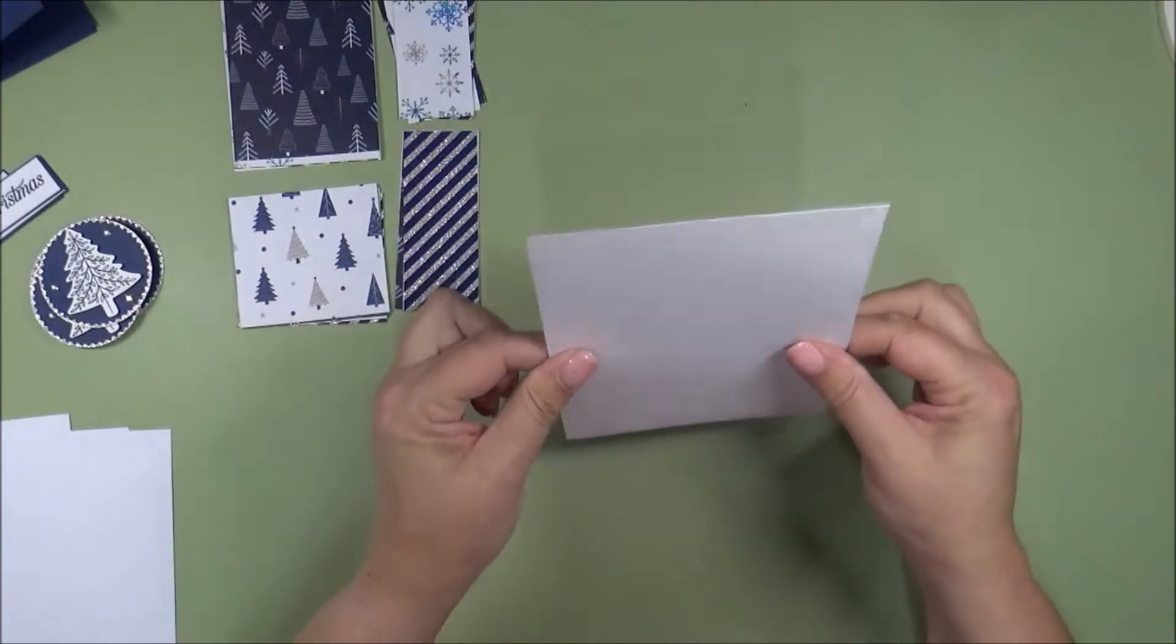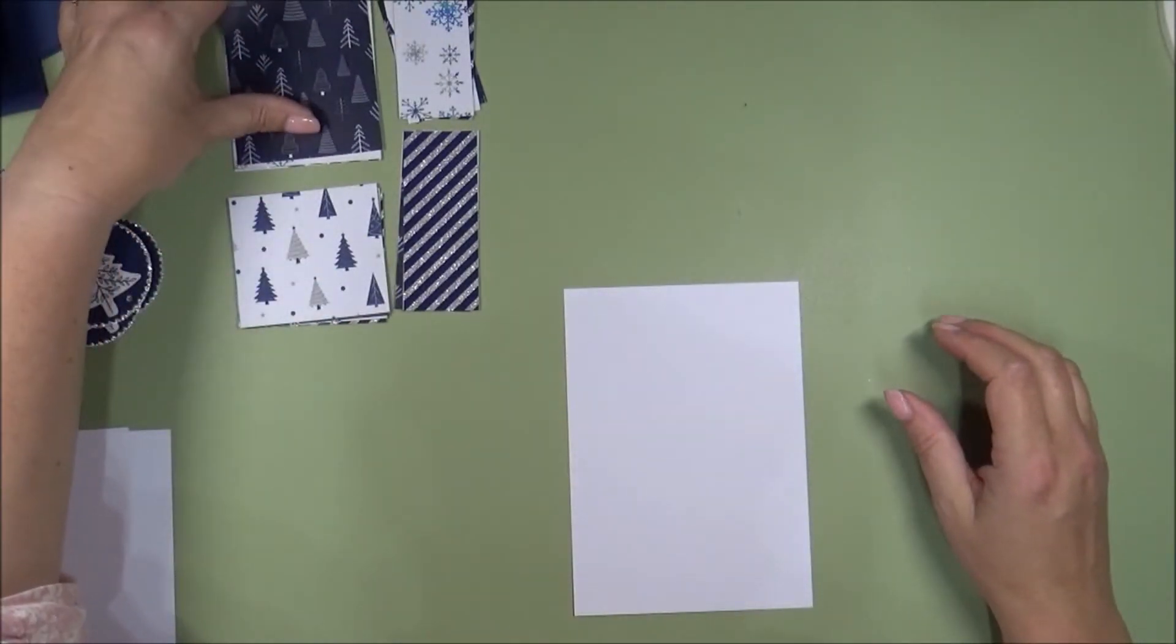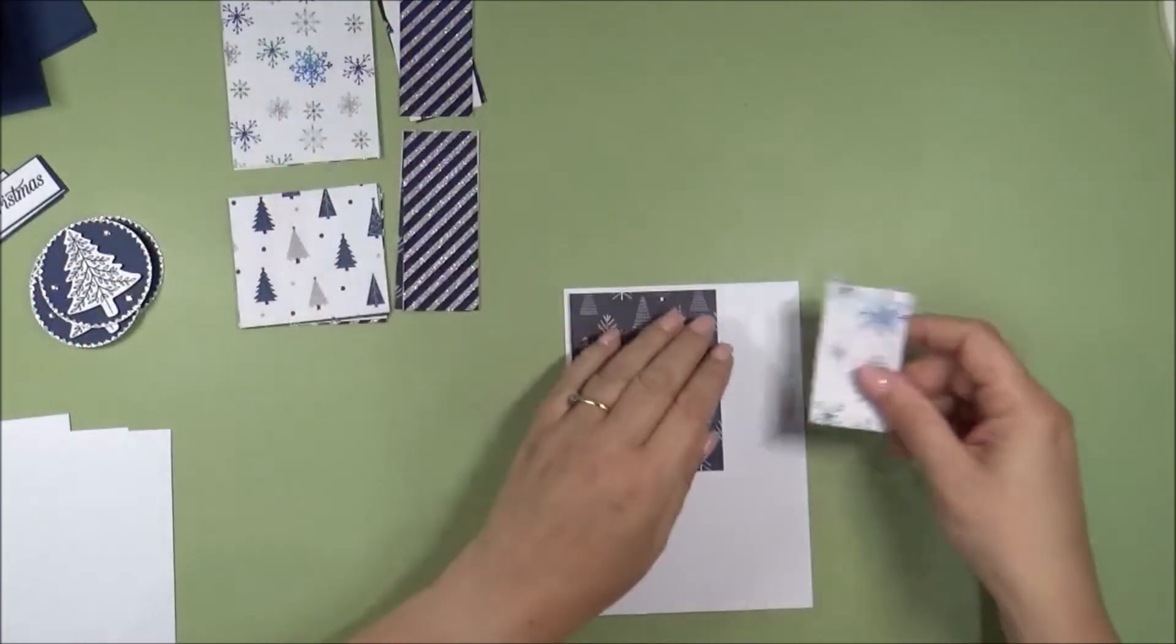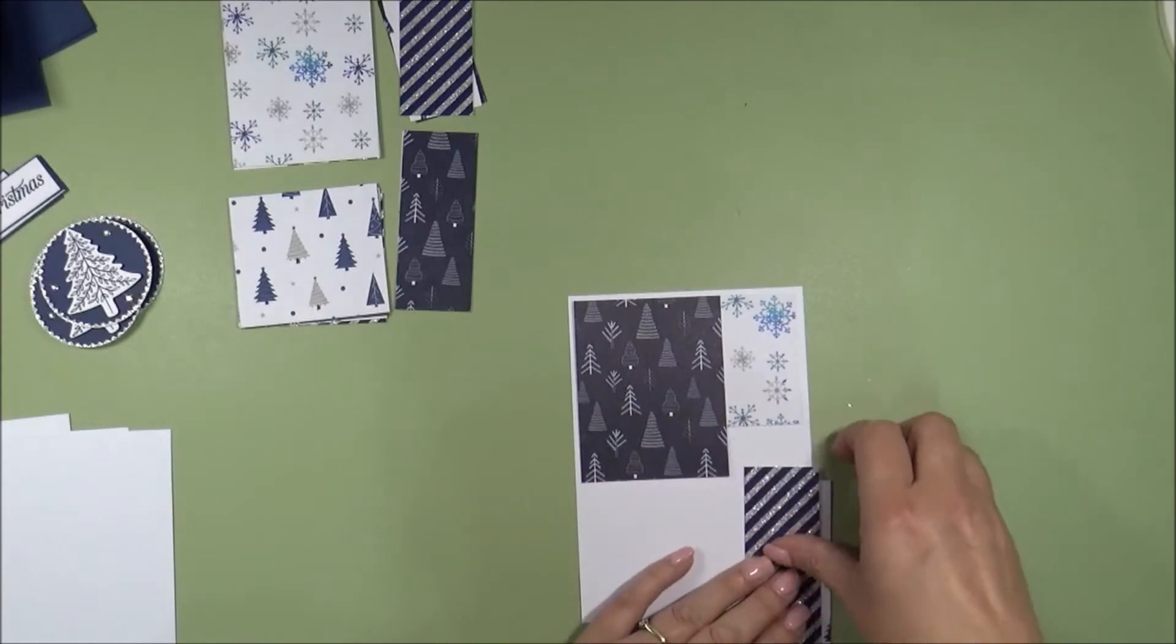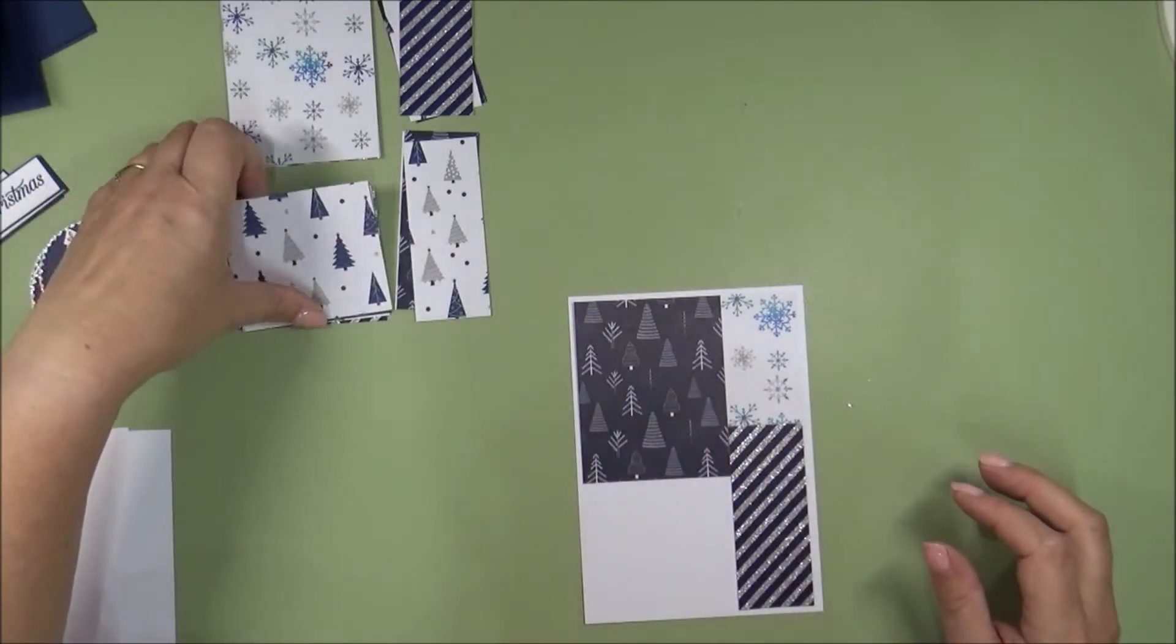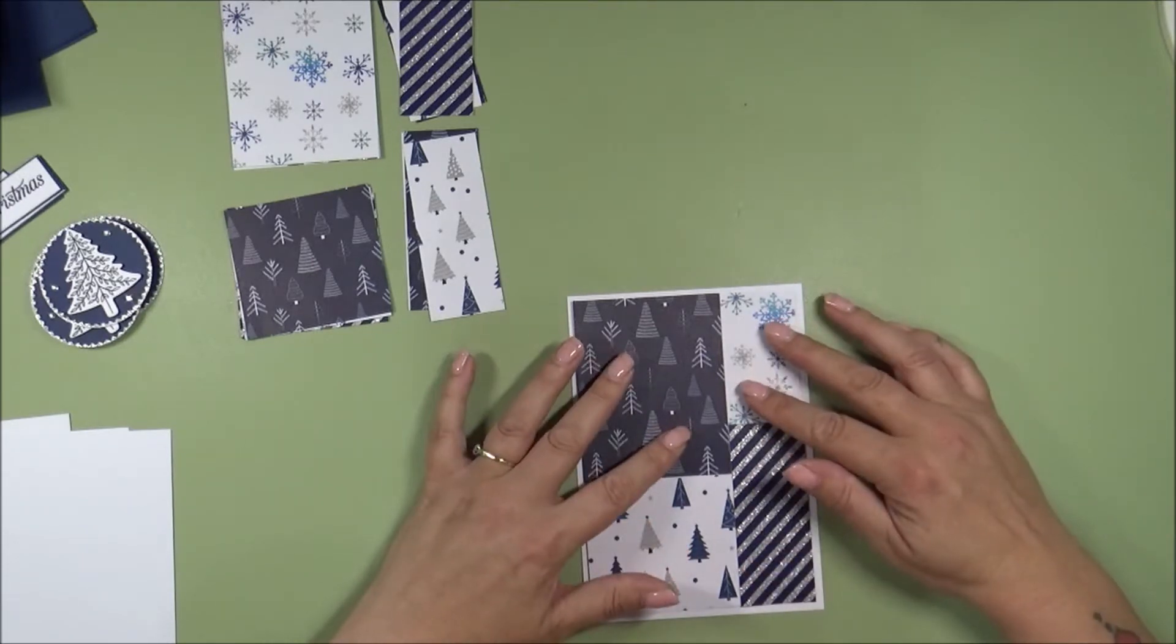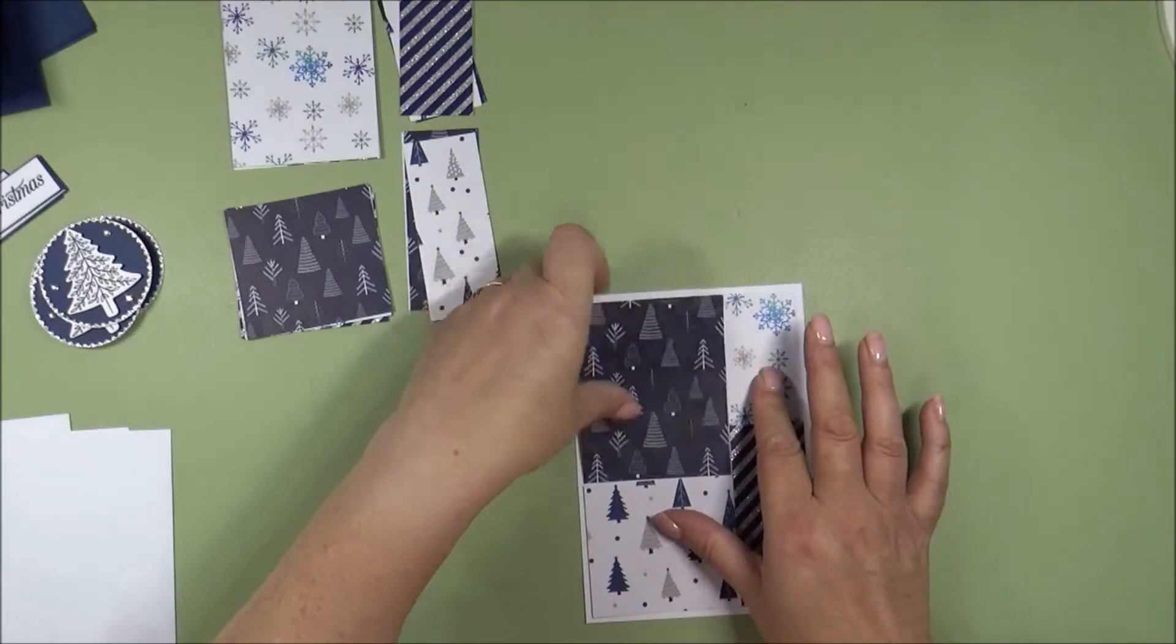And then grab one of your card bases, not card bases, sorry, your mats, and just grab the top one from the first pile, and just lay that down. Grab the top one from this top right pile, the top one from the third pile, and then the top one from this pile. And so then what you're going to do is just stick these down onto your card base, and just push up the pieces so that they go together.